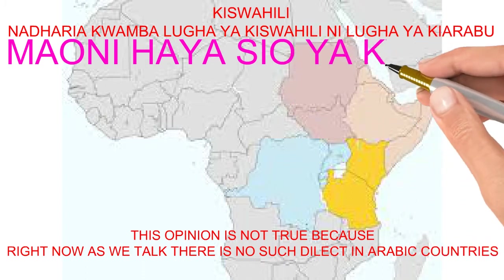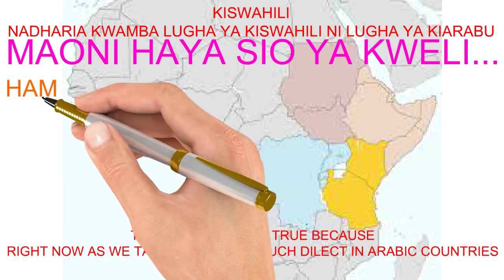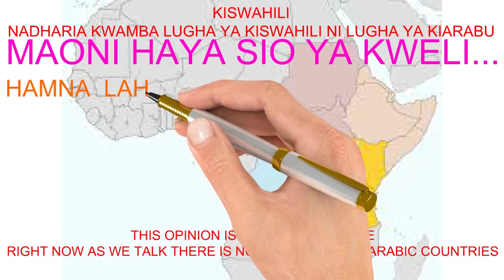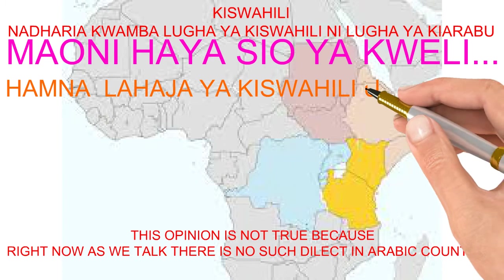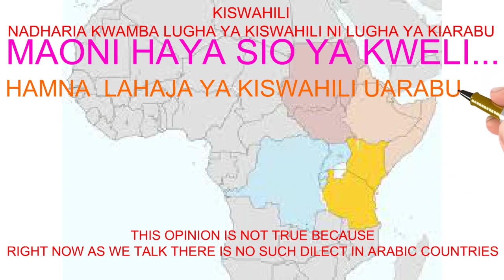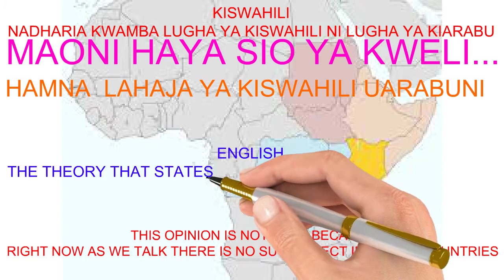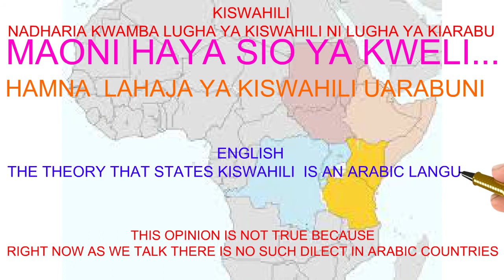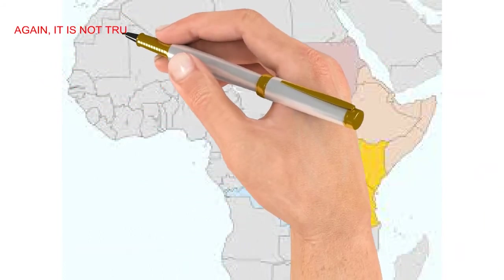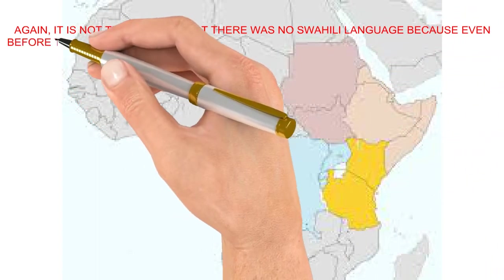In our last lesson we talked about the origin of Swahili and we mentioned three theories. Three theories that try to explain the origin of Swahili. The first theory says that Kiswahili is an Arabic language, and the last theory states that Kiswahili is a mixture of Bantu languages and foreign languages.